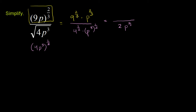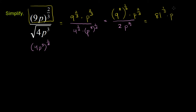Now 9 to the 2/3 — the cube root of 9 isn't anything easy. But you can think about it this way: you could say it's 9 squared. We can view 9 to the 2/3 as 9 squared to the 1/3 power, because 2 times 1/3 is 2/3. And then that times p to the 2/3. This equals 9 squared which is 81, so it's 81 to the 1/3 power times p to the 2/3.